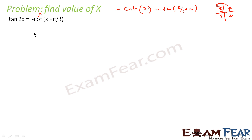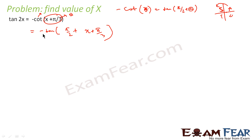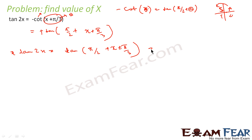So we can also say minus cot of theta is equal to tan of (π/2 + theta). Here in our case theta is equal to x + π/3, so this whole thing is our theta. Therefore minus cot(x + π/3) is equal to tan of (π/2 + x + π/3), which equals tan of (5π/6 + x).